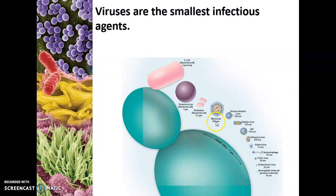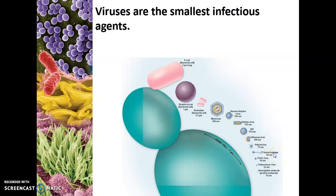Then you have the largest known virus, Mimivirus, which is quite big — actually bigger than the Rickettsia bacterium. But then you have all these other viruses: herpes simplex virus, rabies virus with its bullet shape, HIV, influenza, adenovirus, bacteriophage — which can attack E. coli — poliovirus, yellow fever virus, and down here, this little dot is the hemoglobin molecule.